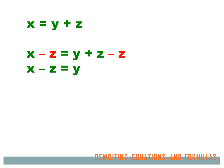On the side with the y, I've got a plus z, and I need to get rid of that to isolate the y. So how do I get rid of a plus z? I subtract z. And if I subtract z from the right side, I've got to subtract z from the left side. The z's cancel each other out because one's positive and one's negative, leaving just y on the right side. And the left side now reads x minus z. That wasn't hard, was it?